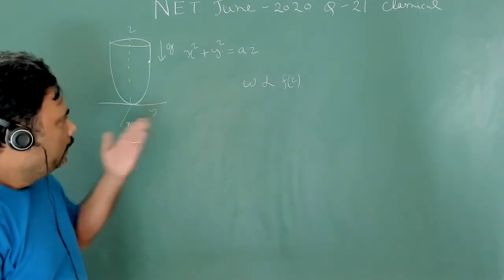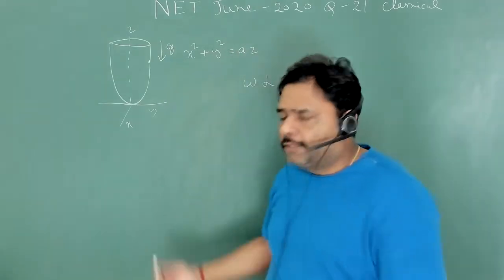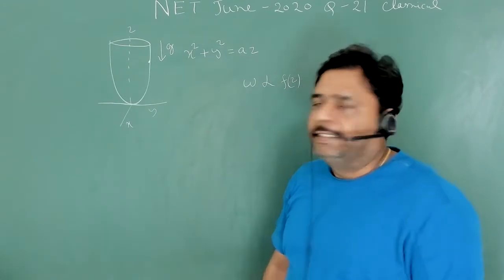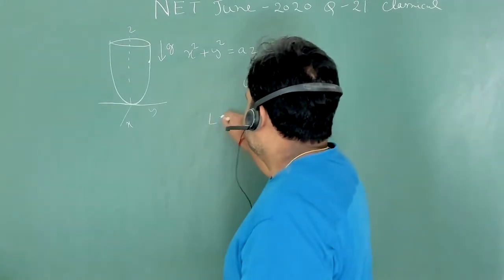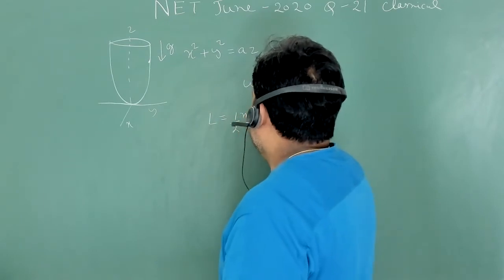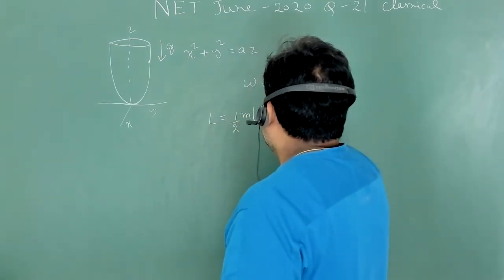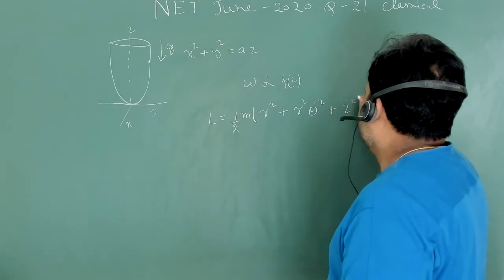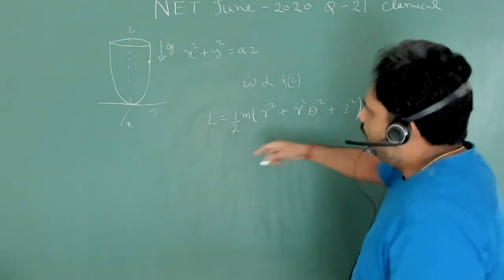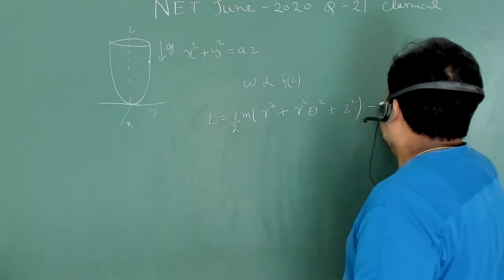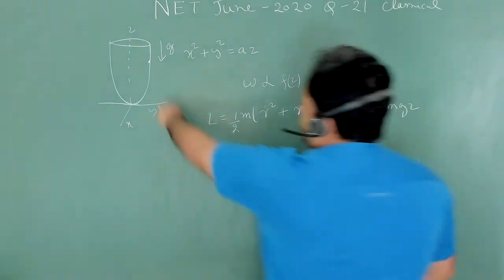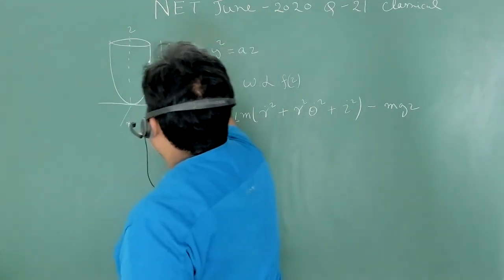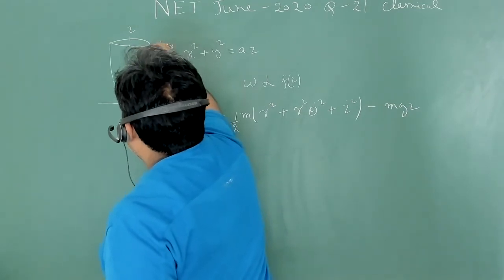We can solve this problem in cylindrical coordinates. We write the Lagrangian in cylindrical coordinates: L = (1/2)M(Ṙ² + R²θ̇² + Ż²) minus the gravitational potential energy MgZ, where Z is the height and the coordinates are R, θ, and Z.